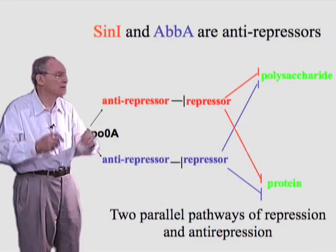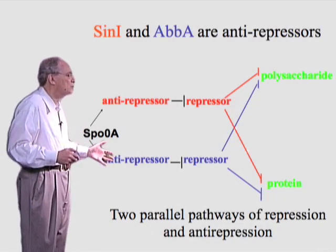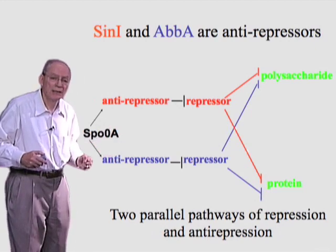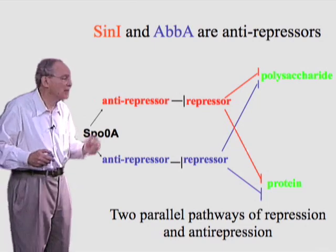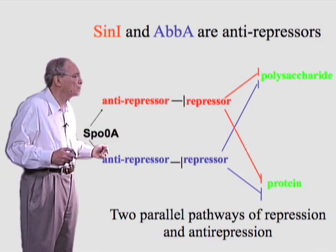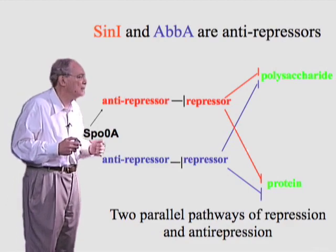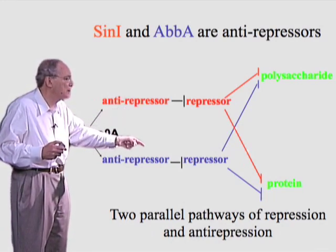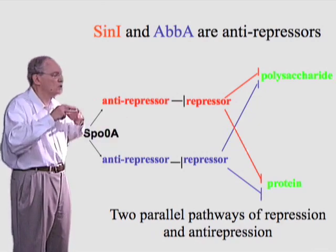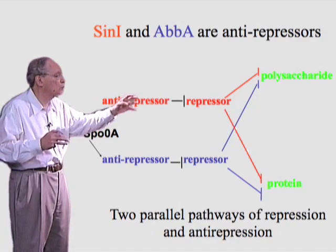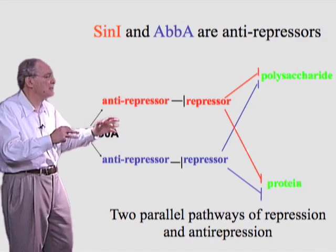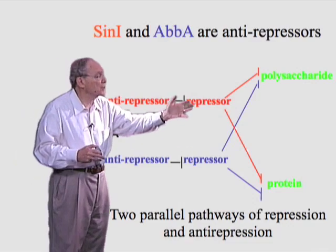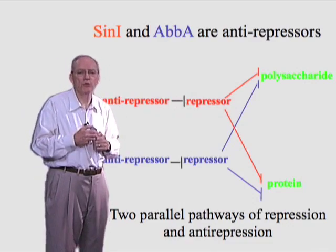How does the whole system get going? That's the role of the master regulator, Spo0A. Spo0A is a master regulator both for sporulation, as seen in the previous presentation, and it's also the principal regulatory protein responsible for triggering biofilm formation. Spo0A turns on the genes for both anti-repressors — SinI and AbrA. When Spo0A becomes activated, that leads to the production of both anti-repressors, which then bind to and inactivate their respective repressors, finally leading to derepression of the two operons responsible for matrix production.